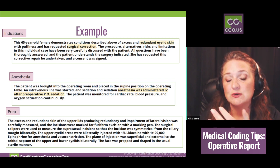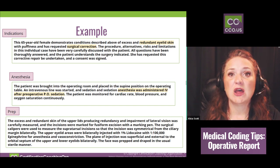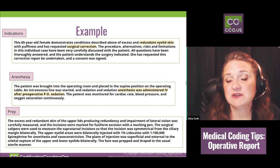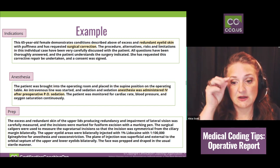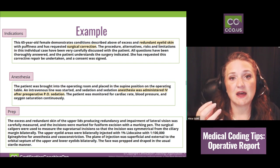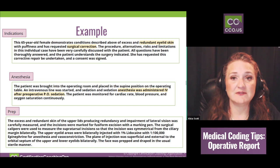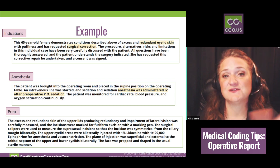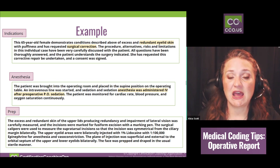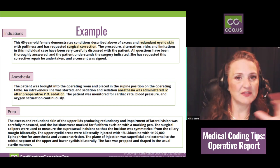The indications section in our example shows a 65-year-old female with redundant eyelid skin with puffiness — they're going to do a surgical correction, a blepharoplasty. As we age, the elasticity of that delicate eyelid skin weakens and it can cover the eyes to where patients have difficulty seeing. From this first portion of the op report body, we abstract: she has redundant eyelid skin and they're going to surgically correct it. It matches the procedure listed at the top — nothing extra is being done.